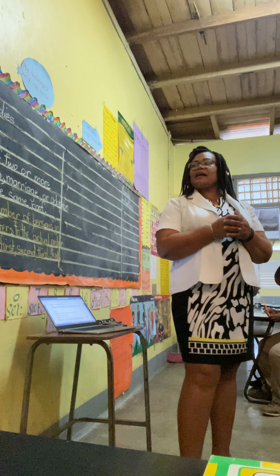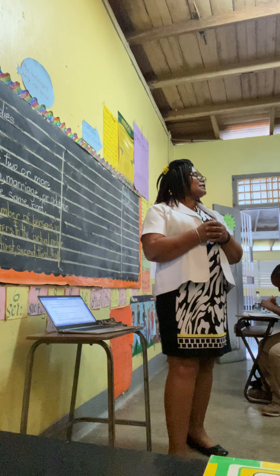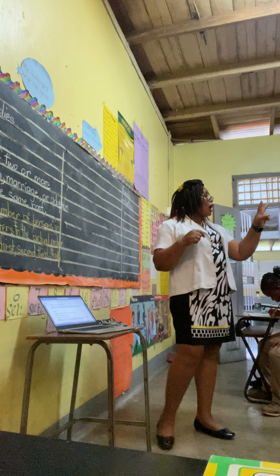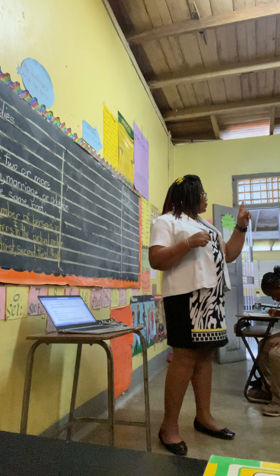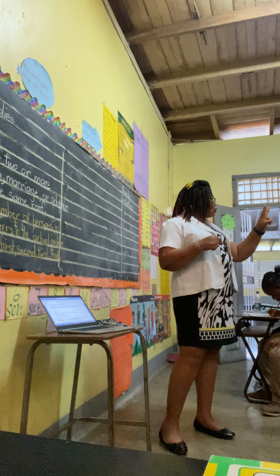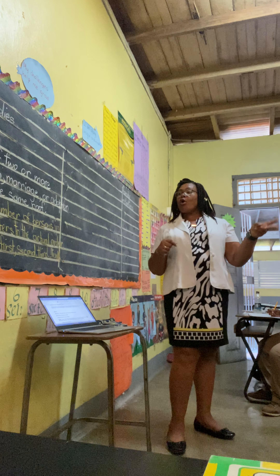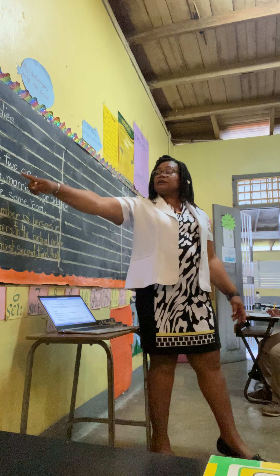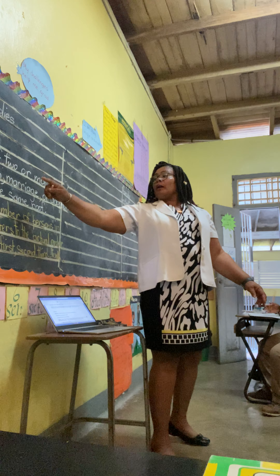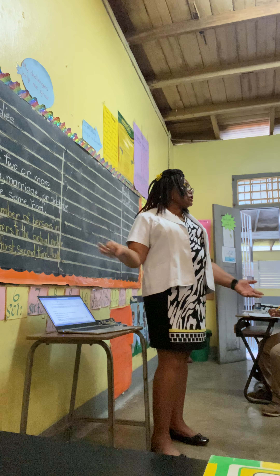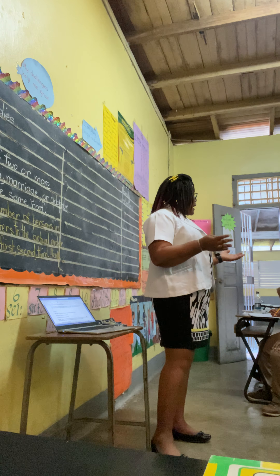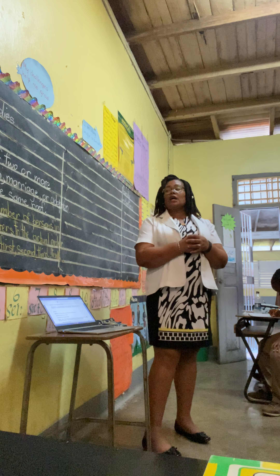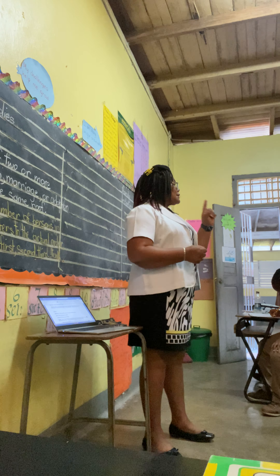A family is a group of two or more persons — so it can't be one — related by birth, marriage, or adoption, and related by blood also. And they must be living under the same rules.